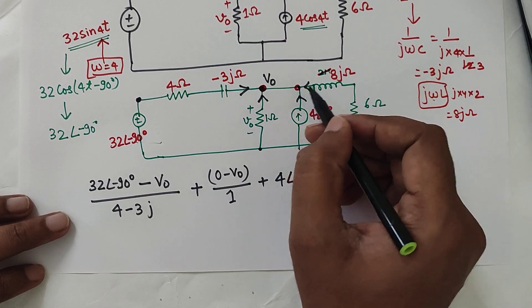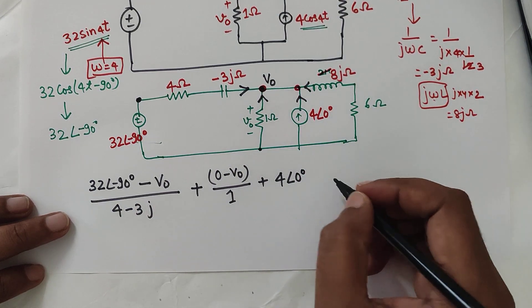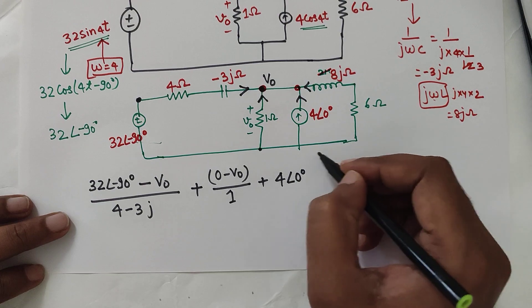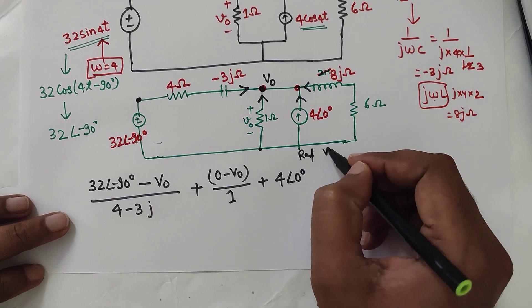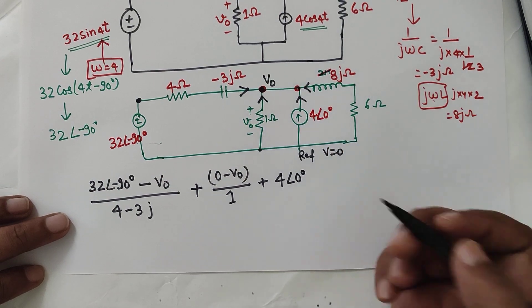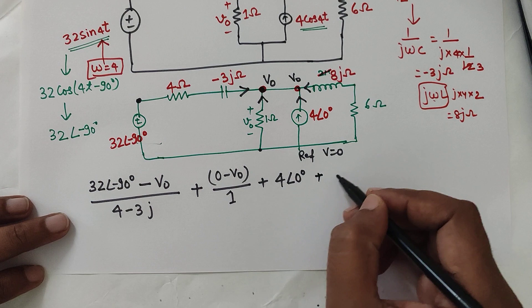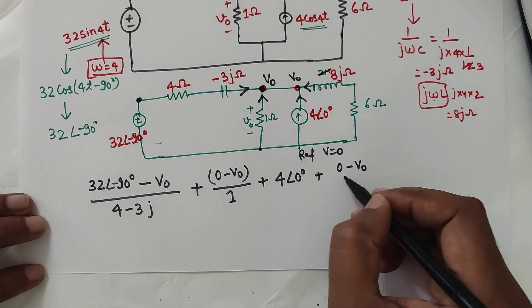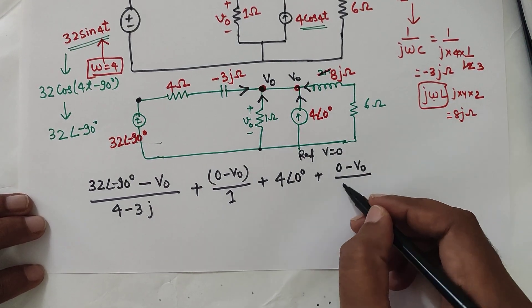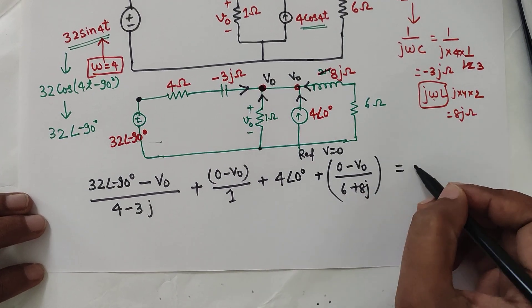And the fourth incoming current will be from this impedance which is 6 plus 8j. So here this is reference potential V equal to 0. So 0 minus V0. The potential here is V0. So I can write 0 minus V0 divided by 6 plus 8j equal to 0.